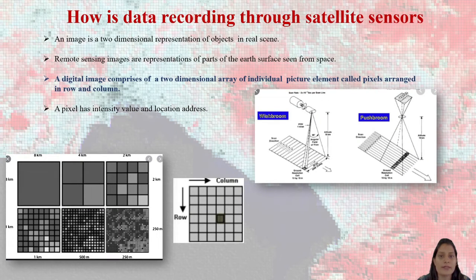Now how is data recording through the sensor? We all know that there is a row and a path. You can see here the square boxes which I have shown is row and a column. That row and a column, that one square will be your one pixel. A pixel has intensity value and location address. That pixel, one pixel will be having the address of your data, the data which is captured. The whole earth is divided in such type of pixel grids and accordingly data will be captured. An image is a two-dimensional representation of object in real scene.